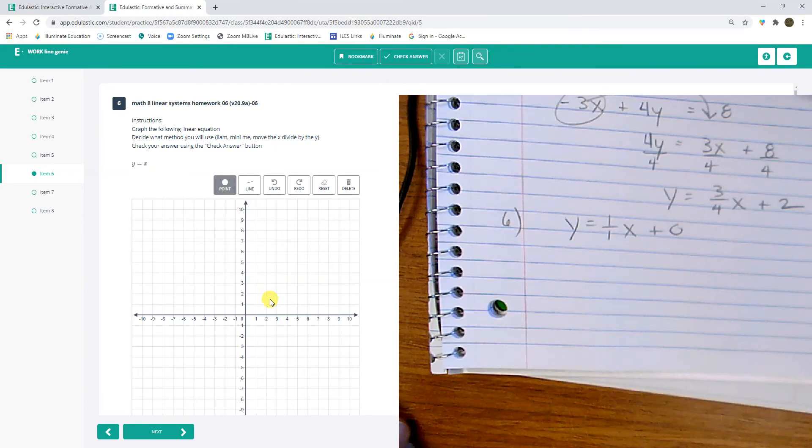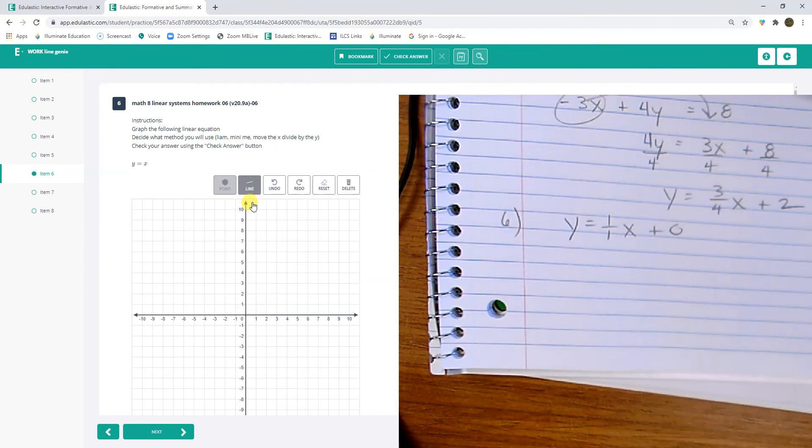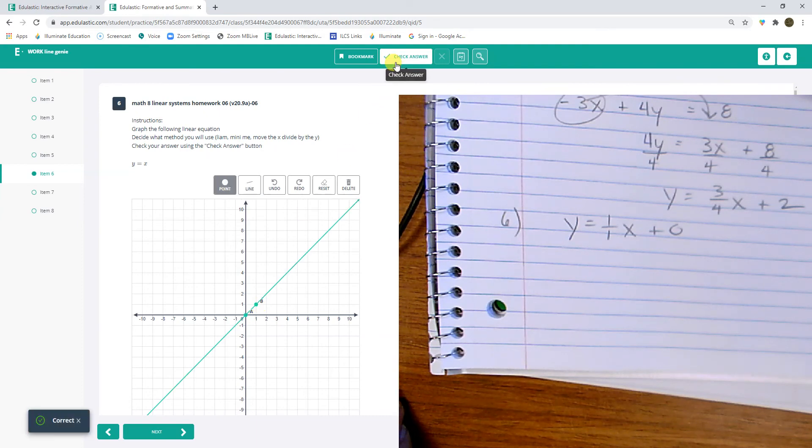It's really y equals 1 over 1x plus 0. So slope-intercept form. Start at 0. Start at 0. Up 1 over 1. There we go. Check it. Looks good.